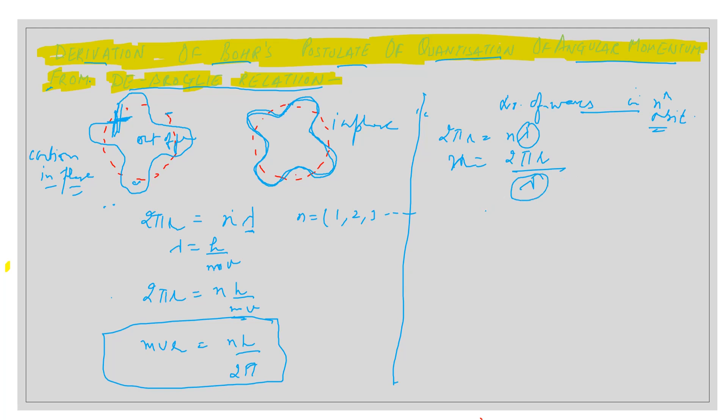We put the value of λ to be h/mv. Taking mv up, we will get 2πmvr/h.